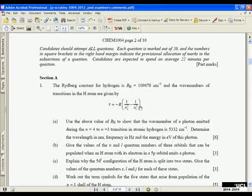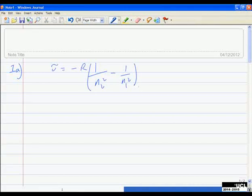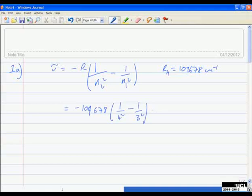The first part, A, is to use this value of RH, 109678, to show the wave number of the photon emitted from N equals 4 to N equals 3 is 5332 reciprocal centimeters. So let's do that bit first. Always good to tell the examiner where you are, so this is question 1A. We've got that the wave number is minus the Rydberg constant into 1 over N2 squared minus 1 over N1 squared, and we're told to use the value of RH here, 109678 reciprocal centimeters. So really, this is just putting numbers into the equation, and when I stick those numbers into my calculator, I get 5332 reciprocal centimeters, making sure to put in the units.